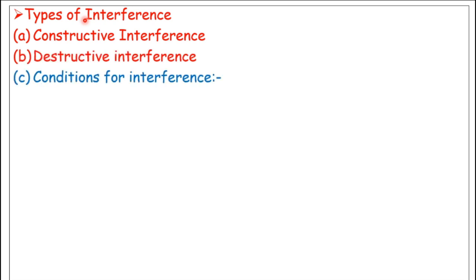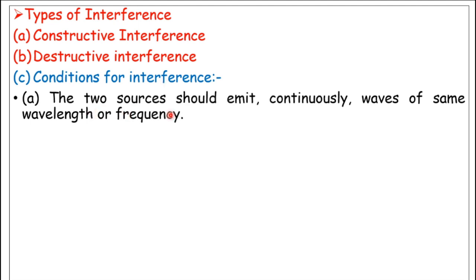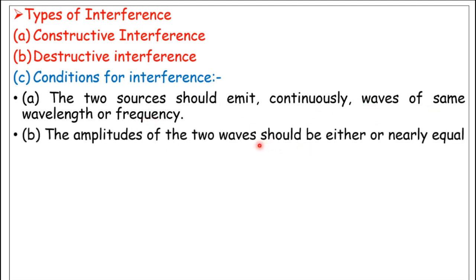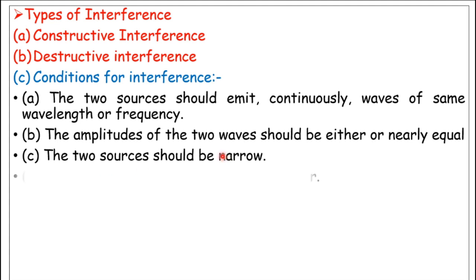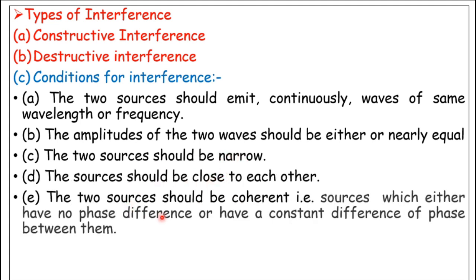There are different types of interference — either constructive or destructive. Before discussing these, let us understand the conditions necessary for interference. Condition one: the two sources should emit continuous waves of the same wavelength or frequency. The amplitude of the two waves should be equal or nearly equal — this is for complete interference. The two sources should be narrow, close to each other, and coherent — meaning they have no phase difference or a constant phase difference between them.